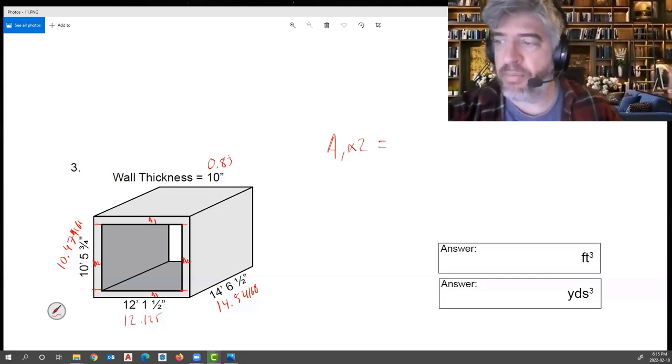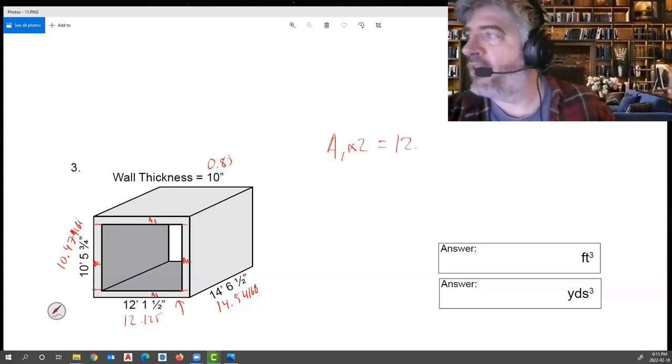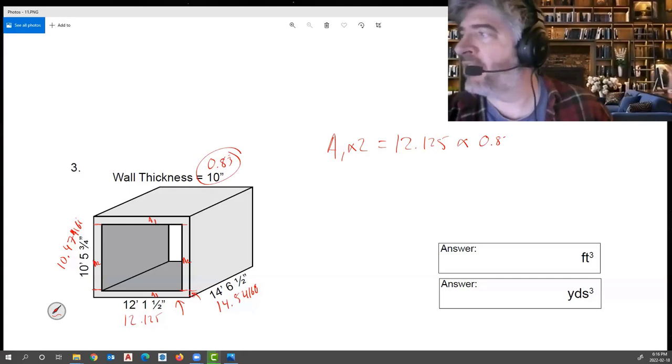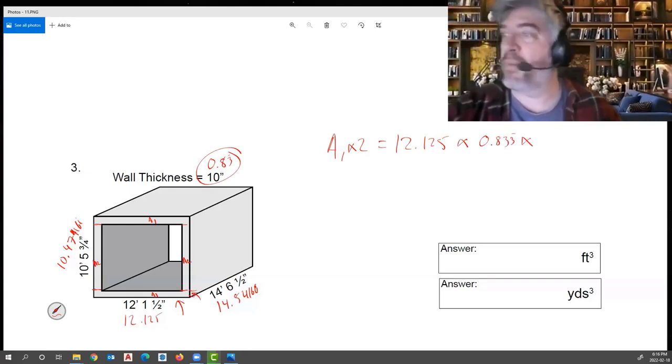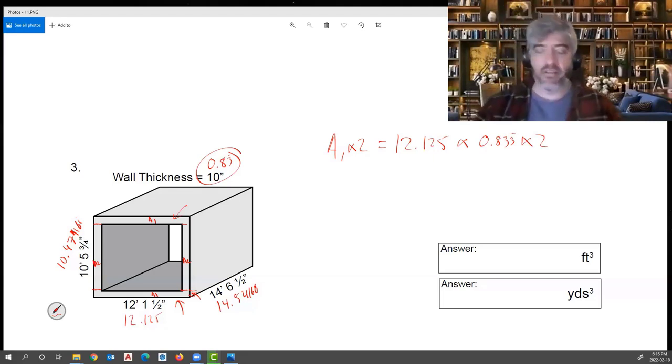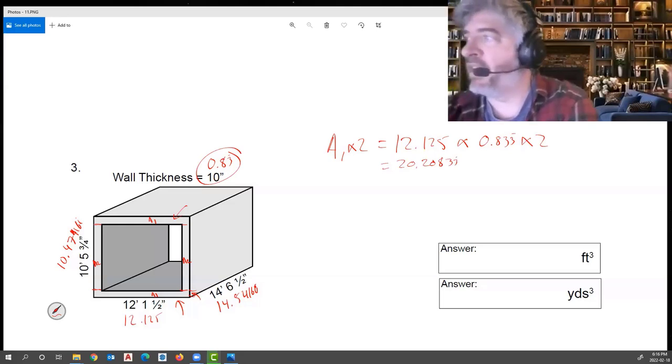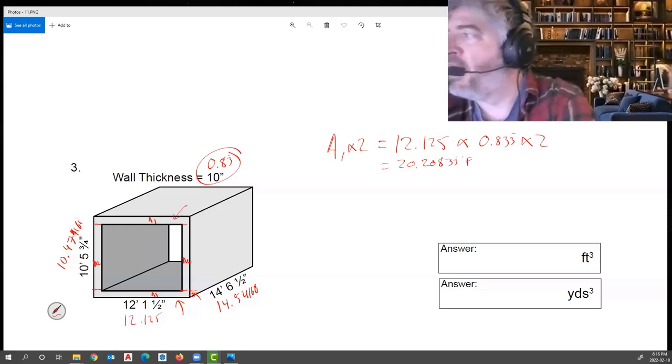Area one, looking at this bottom shape right here, the length is 12.125 and then the width here is just that little width, which is our 10 inches, which is 0.83 repeating. I'm going to make sure to times this by two because I have two sections, the bottom and the top. So I have 12.125 times 0.8333 times two, which gives me 20.2083 repeating, and that is square feet.